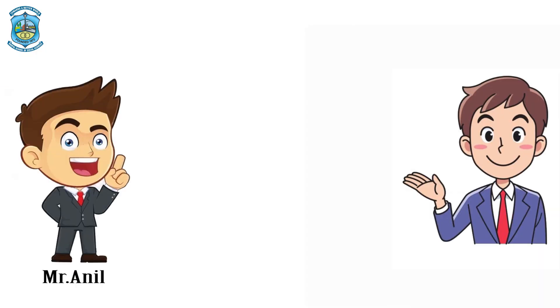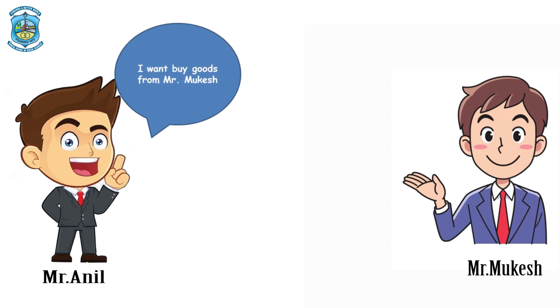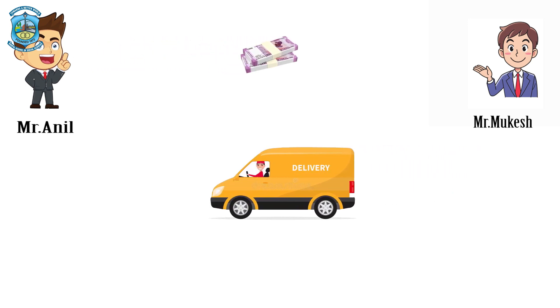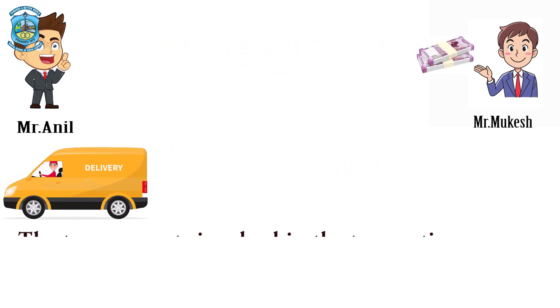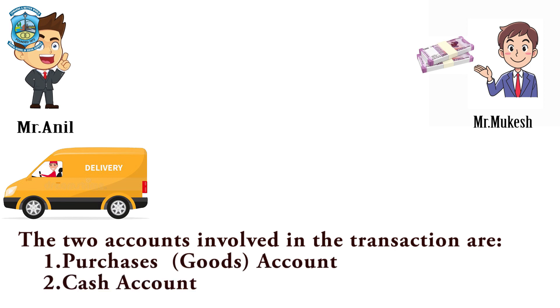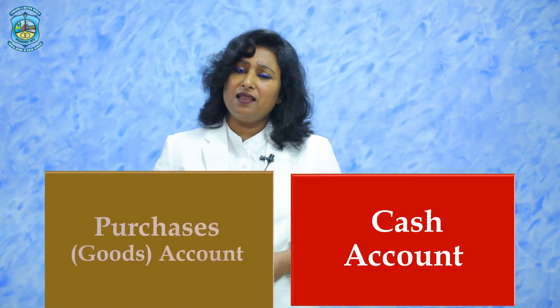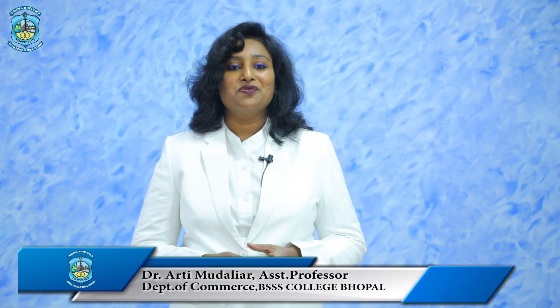Let us understand it with the help of an example. Here's Mr. Anil and here's Mr. Mukesh. Mr. Anil wants to buy some goods from Mr. Mukesh and Mr. Mukesh is ready to sell goods to Mr. Anil, but mere intention of buying and selling will not become a transaction to be recorded in the journal book. So there has to be a transaction — Mr. Mukesh will send the goods to Mr. Anil and Mr. Anil will pay cash to Mr. Mukesh. This becomes a transaction to be recorded in the books of accounts. The two accounts included in this particular transaction are purchases account and cash account. But then there is a confusion: which account is to be debited and which account is to be credited? And here comes the rules for debit and credit.